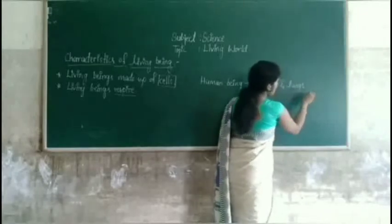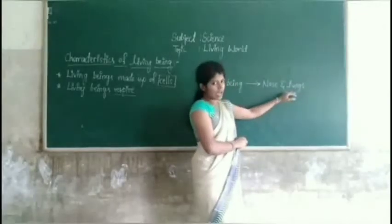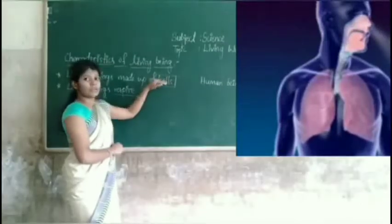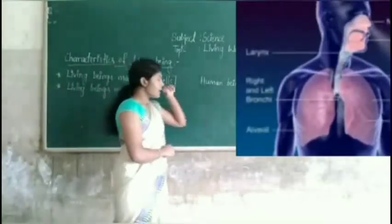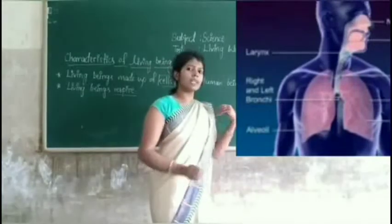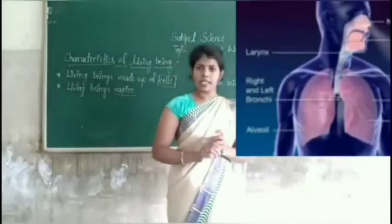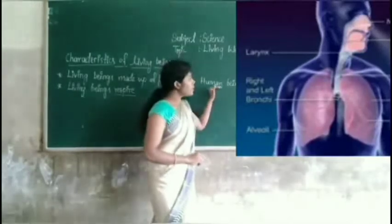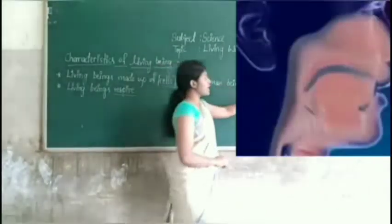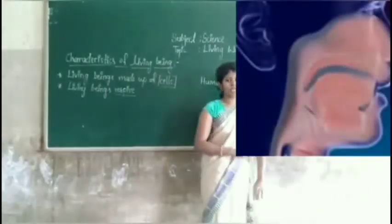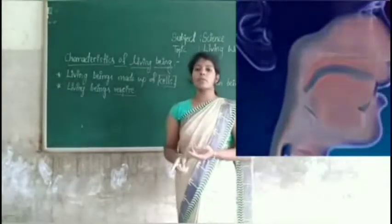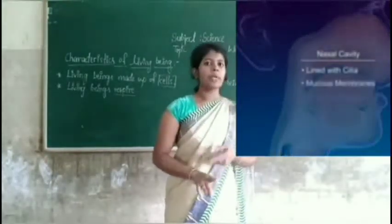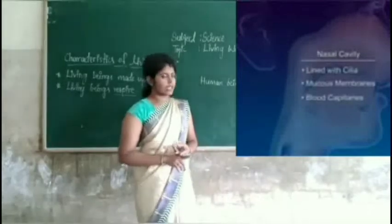Lungs are one of the organs made up of many cells. Are all organisms the same way? No. In human beings, we use the organs nose and lungs to respire. Lungs help to intake oxygen and breathe out carbon dioxide.